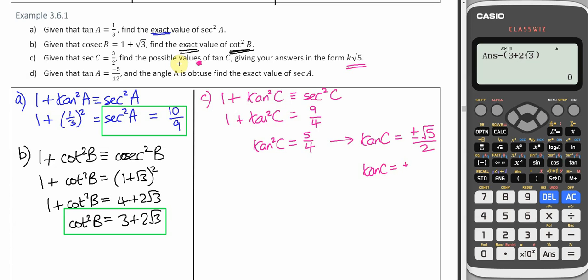So that would get full marks. You could also write it as plus or minus a half multiplied by root 5. Give your answer in either of those two ways would do.